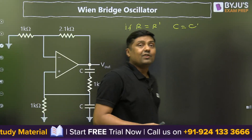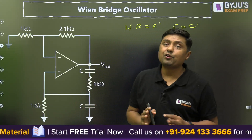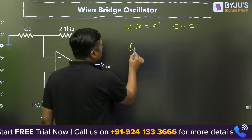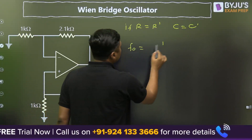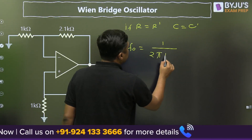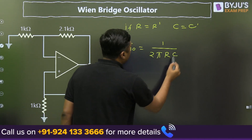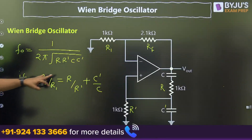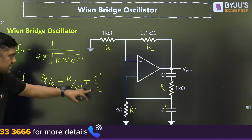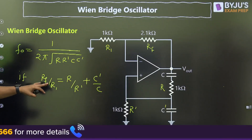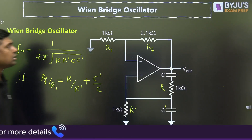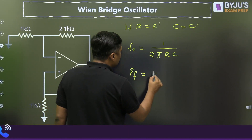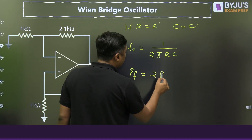If R is equal to R-dash and C is equal to C-dash, then the frequency of oscillation simplifies to 1 by 2 pi RC. Under this condition, since R and R-dash are equal and C-dash and C are equal, the condition for oscillation becomes RF equal to 2 times R1.